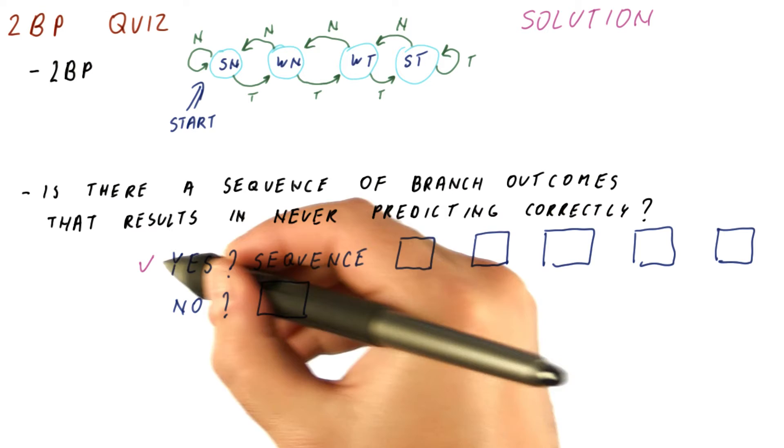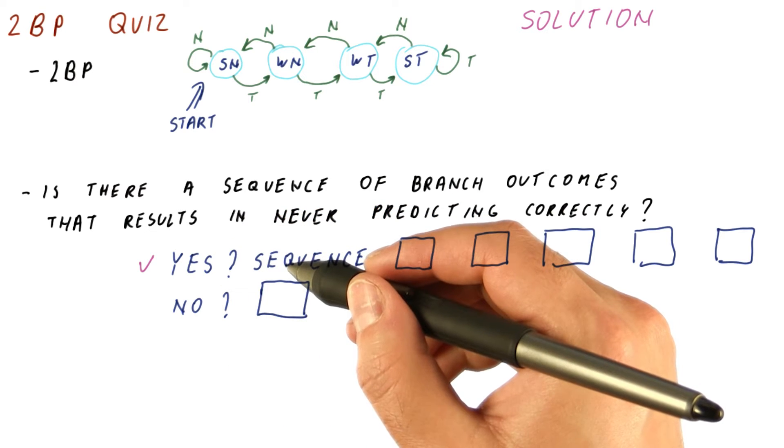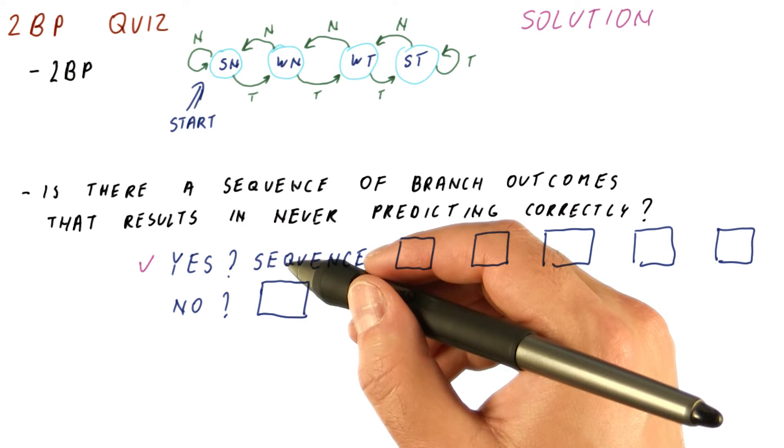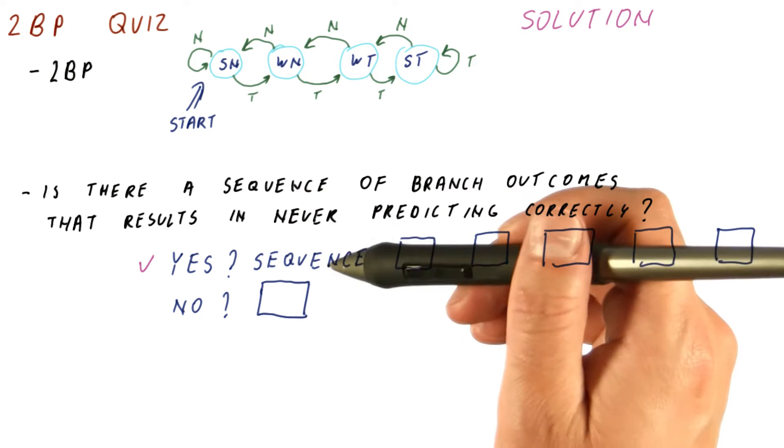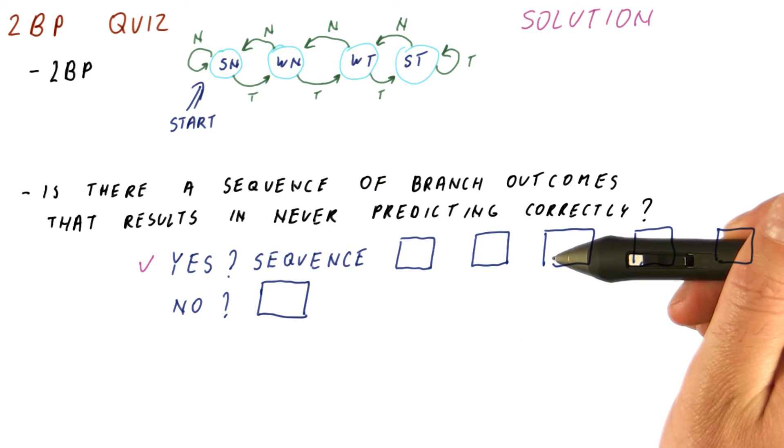And the answer is, of course, yes. Every single predictor has the worst case scenario of always mispredicting. What you have to do to find out what that worst case scenario is, is simply design a sequence such that whatever the state of the predictor is, the sequence goes the opposite way.